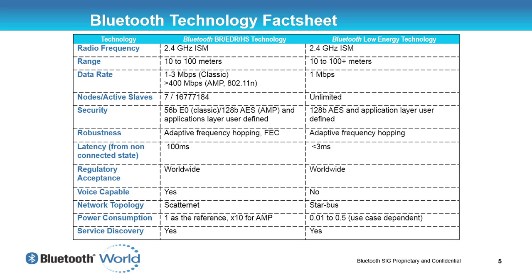Bluetooth Low Energy has a 1 megabit per second physical data rate, the same as Basic Rate, but Basic Rate uses it more efficiently. Low Energy can transmit application data at about 250–300 kilobits per second, while Basic Rate achieves 721 kilobits per second — about two to three times faster. The EDR mode, introduced in the 1.2 specification, allows up to 3 megabits per second at the PHY layer, or about 2.1 megabits per second at the application layer.